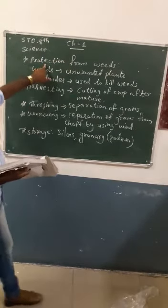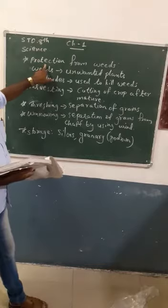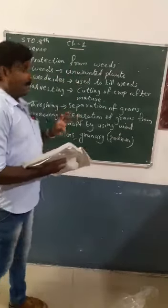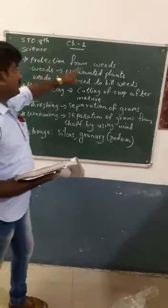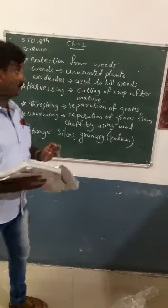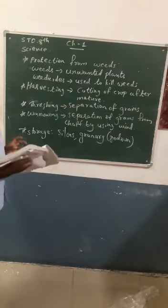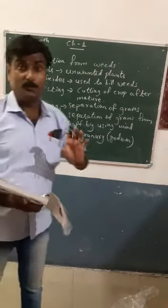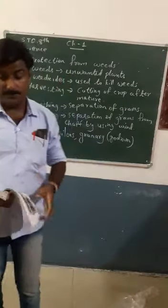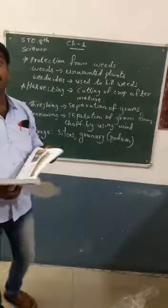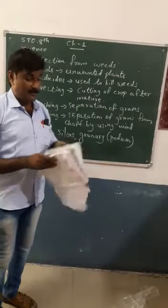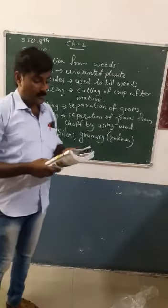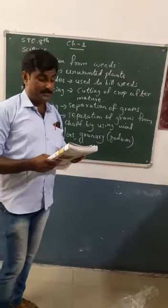The second last step of production in agriculture is the protection from weeds. Weeds are the unwanted plants that grow between our agriculture fields. These undeserved plants are called weeds.